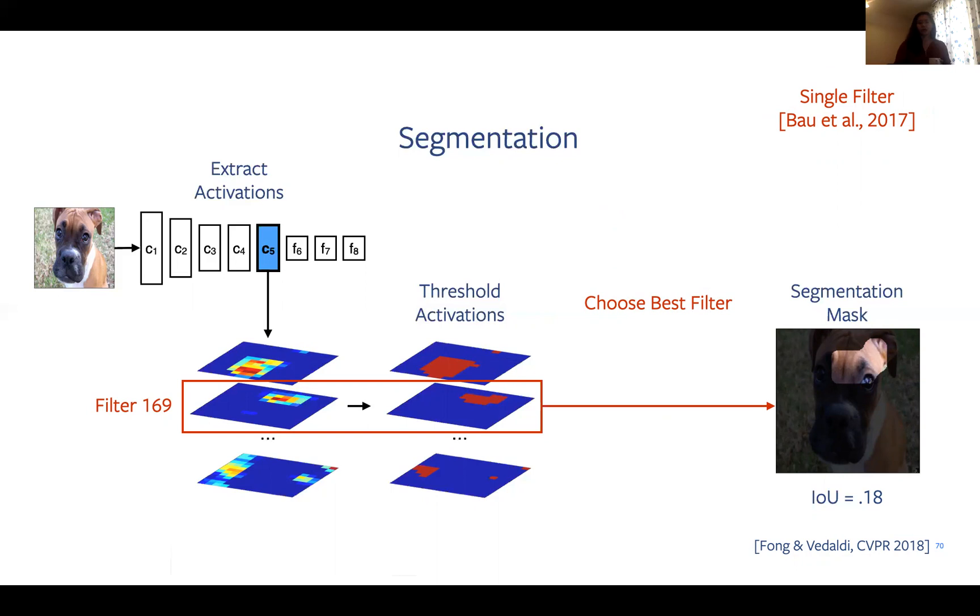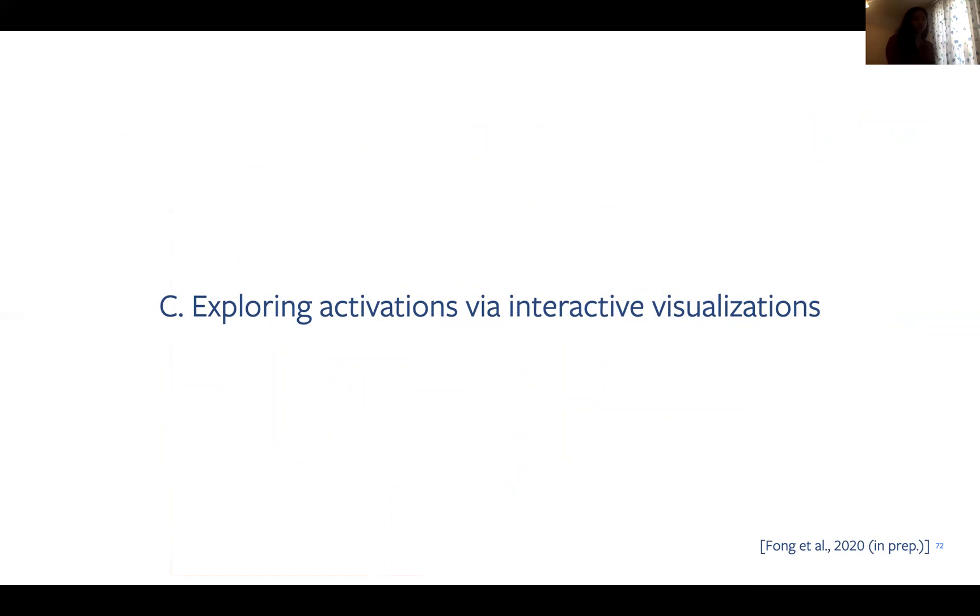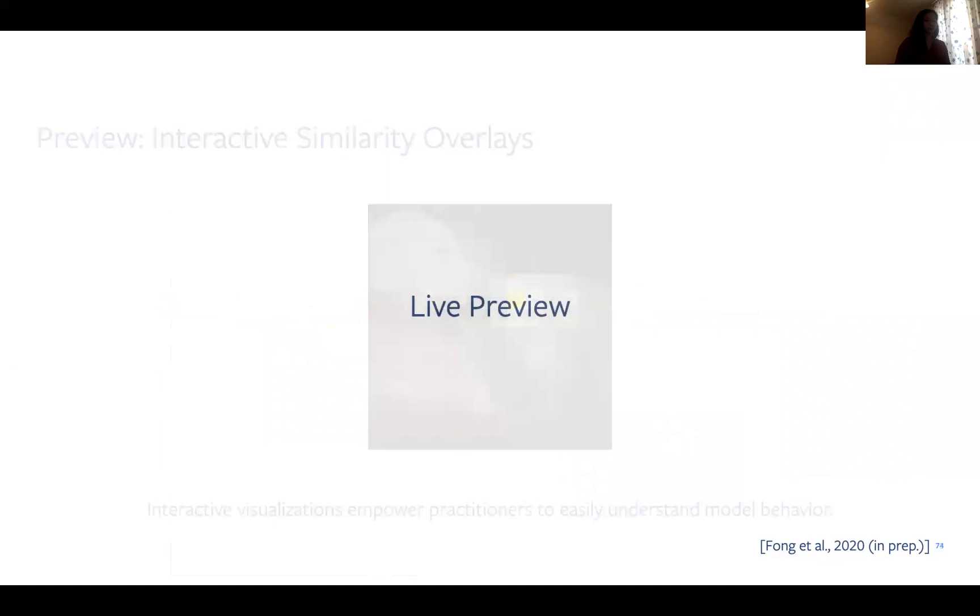Finally, we unify our work with previous work focused on single filters by computing segmentation masks using single filters and choosing the best filter over all training examples. In this case, filter 169 was the best filter for segmenting the dog. The classification task follows similarly, except that thresholding is replaced with global average pooling, which averages all the activations in a single channel, and a biased term is also learned. We do the same filter subset experiments as well. Finally, we're currently working on an interactive visualization tool that allows us to easily explore the representation of intermediate activations. Intermediate visualizations, like ours, empower practitioners and researchers alike to easily understand model behavior using natural interfaces. They also set the stage for collecting annotations that could be used to fix models downstream. Now I'll jump to a quick live demo.